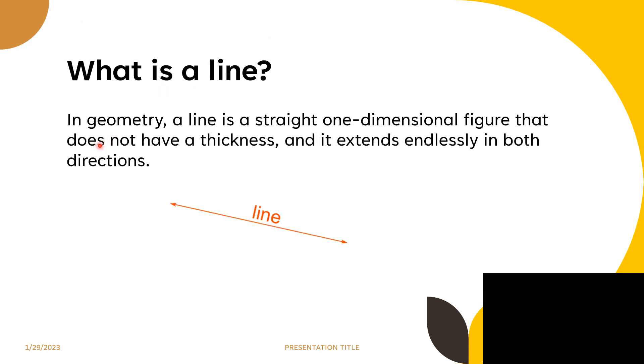What is a line? In geometry, a line is a straight one-dimensional figure that does not have thickness, and it extends endlessly in both directions. This arrow represents that a line is endless; it extends endlessly, it doesn't end.